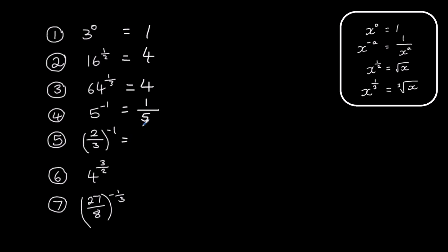Two thirds to the power of minus one: one over two thirds just flips two thirds over, so two over three becomes three over two. Now we've got two rules combined: we've got a half and a cube, so we do it step by step. Power of a half means square root, so four square rooted makes two. But we've still got the cube: two times two times two makes eight.